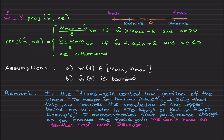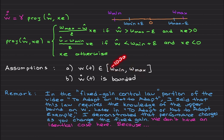In the 'To Adapt or Not to Adapt' MATLAB example video, I demonstrated that performance of the closed-loop system changes as you change the fixed gain. Here we don't have an identical case. As you will see in a later video, if your uncertainty changes between, say, minus one and one, you don't need to precisely know w_min and w_max — in fact you can even choose one thousand and minus one thousand.